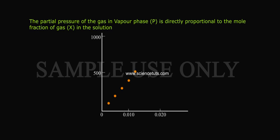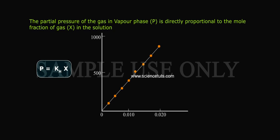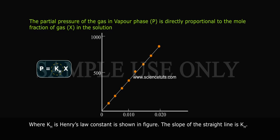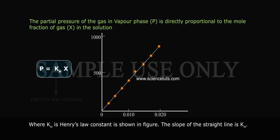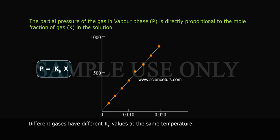The partial pressure of the gas in the vapor phase, P, is directly proportional to the mole fraction of the gas in the solution: P = KH·x, where KH is Henry's law constant, as shown in the figure. The slope of the straight line is KH. Different gases have different KH values at the same temperature.